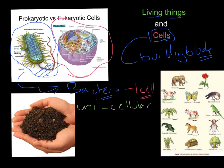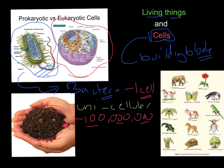Even though a bacterium is only made up of one cell, and that one cell has to perform all its functions to keep it alive, we still call it living. If you look at this soil right here, this amount of soil would contain roughly 100 million, if not more, bacteria. Each of those bacteria is living, but the whole hand of soil would have more bacteria than there are humans living on planet Earth. Even though these unicellular bacteria are very small, they are plentiful and they are everywhere around us.